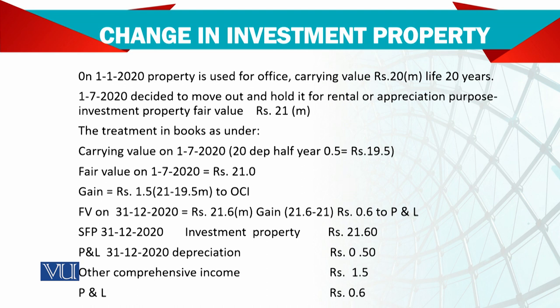Why does it go into OCI? Because previously it was an owner-occupied property. Going forward, when the fair value changes — say the fair value on 31st December 2020 is taken in the accounts as 21.6 million — the difference from the original 21 million goes to the profit and loss account. So the half-year depreciation is charged to profit and loss, the difference of 1.5 million goes to other comprehensive income, and the later change of 0.6 million goes to profit and loss.